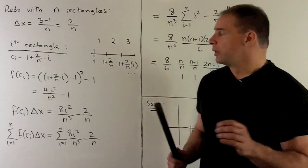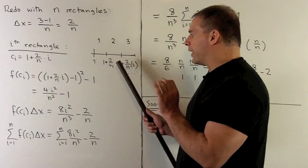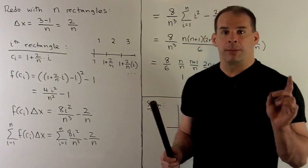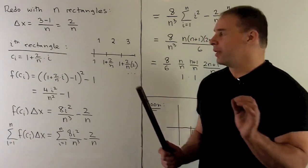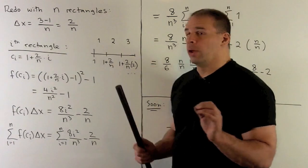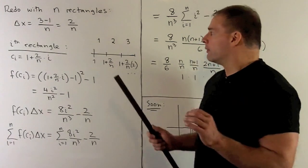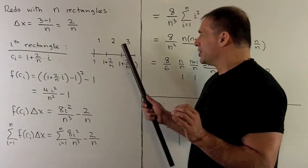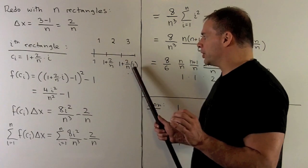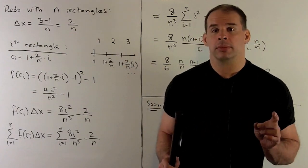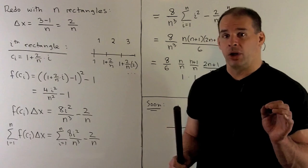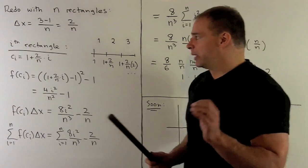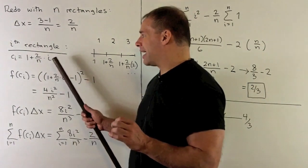Now, you'll note the multiple of 2 over n that I use for each right endpoint is just going to be the number that goes with your rectangle. So, for the first rectangle, we use a multiple of 1. Second rectangle, I use a multiple of 2, and so on. So, for the i-th rectangle, the right endpoint is going to be 1 plus 2 over n times i.